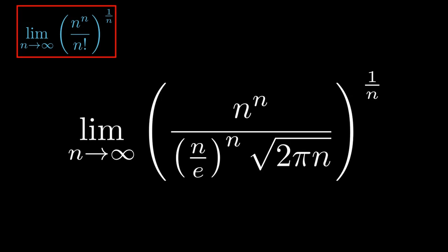Substituting this into our limit, we get the limit as n goes to infinity of n raised to n divided by n divided by e raised to the first power, all raised to n, multiplied by the square root of 2πn, all raised to 1 over n.